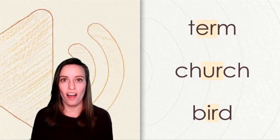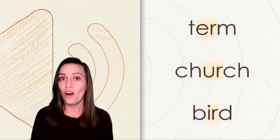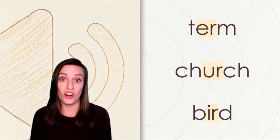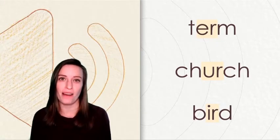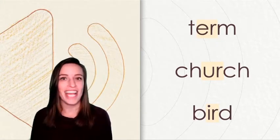Next to the bossy R, the vowels E, U, and I are called the triplets. Because they make the same sound, ER, when they're next to that bossy R. Let's see if we can find these triplets in other words.